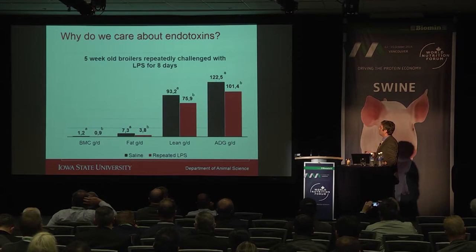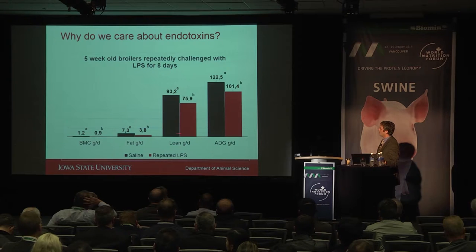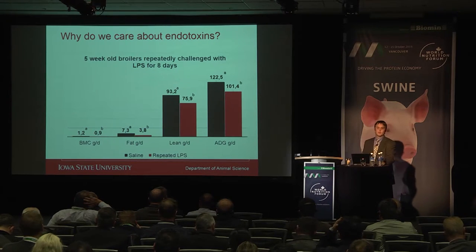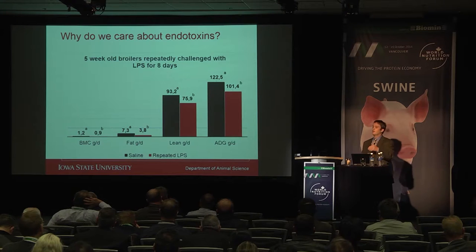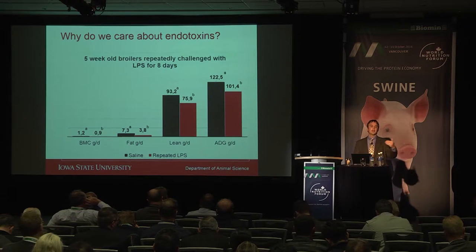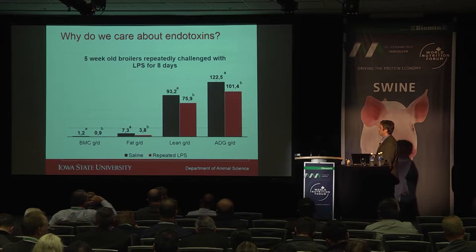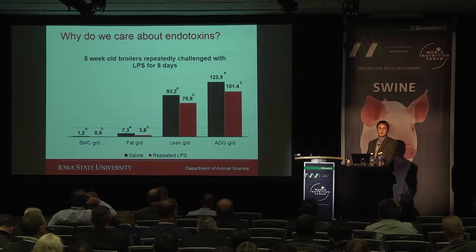Over this eight-day period, average daily gain was reduced by about 20 grams per day. Looking at lean accretion by DEXA scanning for whole body composition, we reduced whole-body lean by nearly 20 grams as well. There was also an impact on fat accretion and bone accretion. So a bird experiencing a repeated inflammatory challenge every 48 hours has antagonized bone, fat, and lean accretion — reflected in its average daily gain.